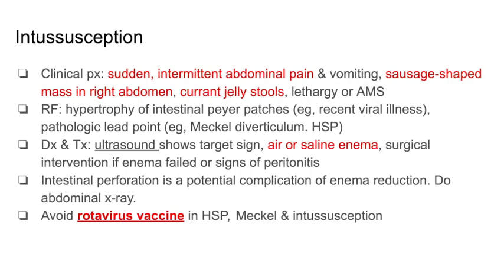Intestinal perforation is a potential complication of enema reduction, so if you suspect it, proceed with an abdominal x-ray. It is very high yield to know that you need to avoid the rotavirus vaccine in Henoch-Schönlein purpura, Meckel's diverticulum, and intussusception.